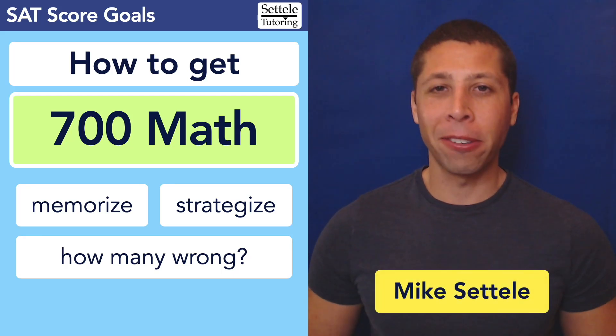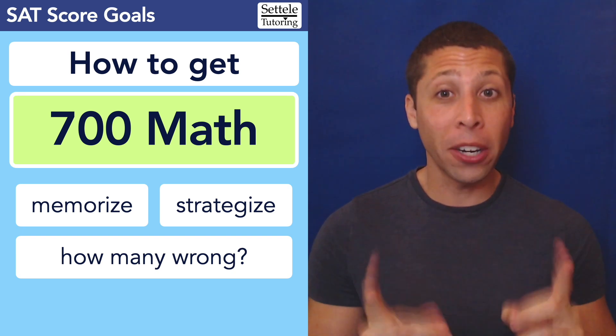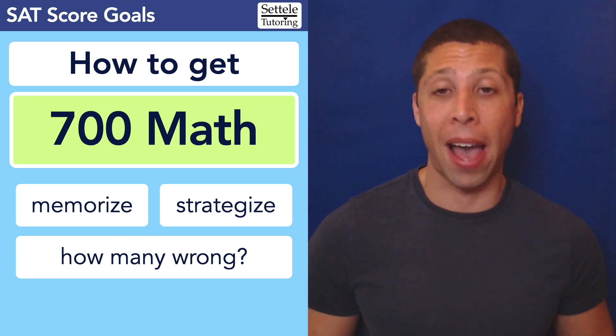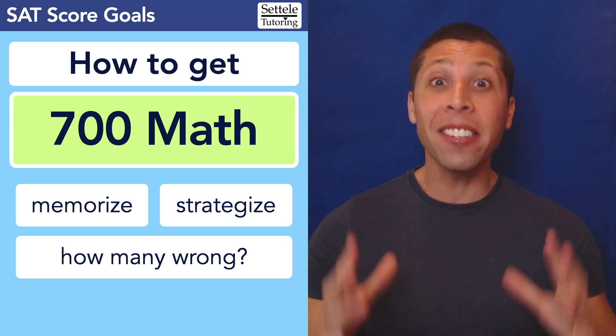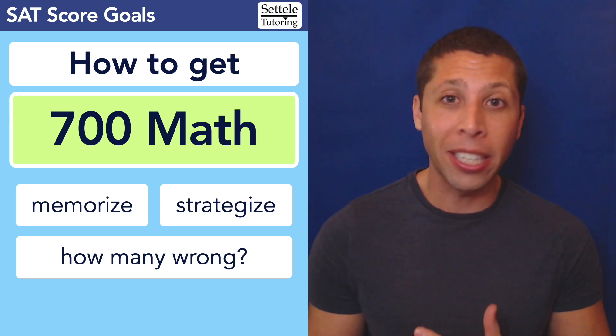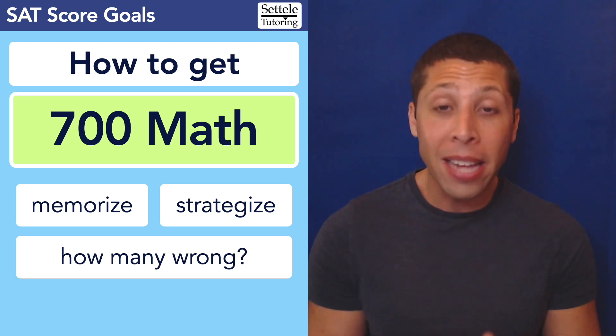Hey everybody, I'm Mike Sattel, founder of Sattel Tutoring, and in this lesson I'm going to explain what it takes to get a 700 on the SAT math sections. It's going to be very hard to do for a lot of people, even if you're good at math, but if you can get a 700, that is an amazing score. You're going to send it to every college. It's going to make your application look amazing.